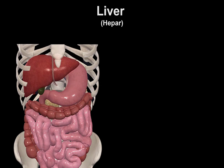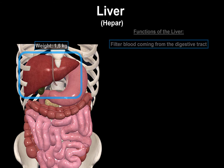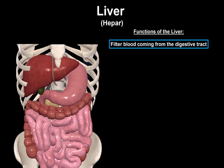The liver, or the hepar in Latin, is the largest internal organ in the body. It lies on the right side of the belly and weighs approximately 1.5 kg, so it's pretty heavy. The liver's main job is to filter the blood coming from the digestive tract before passing it to the rest of the body.